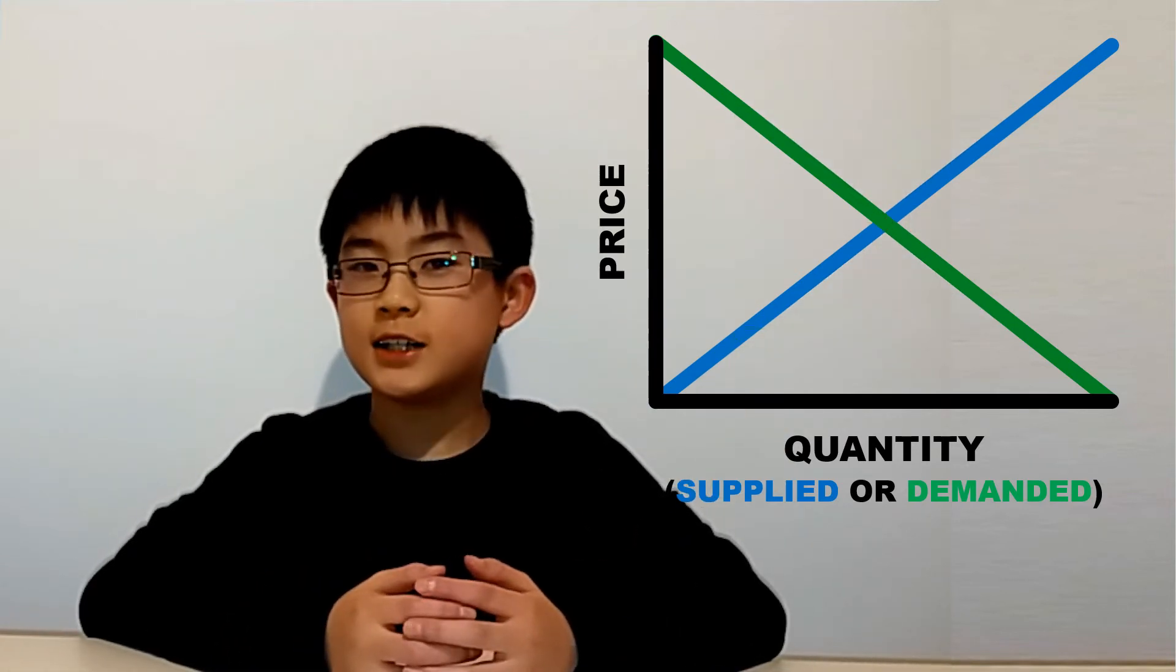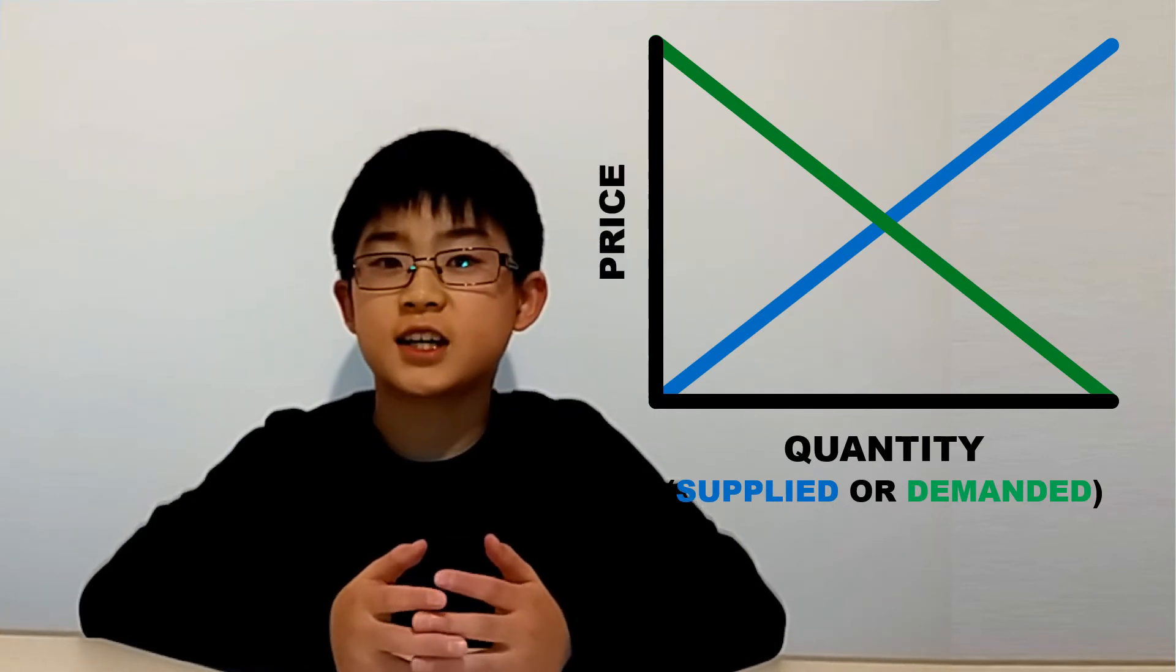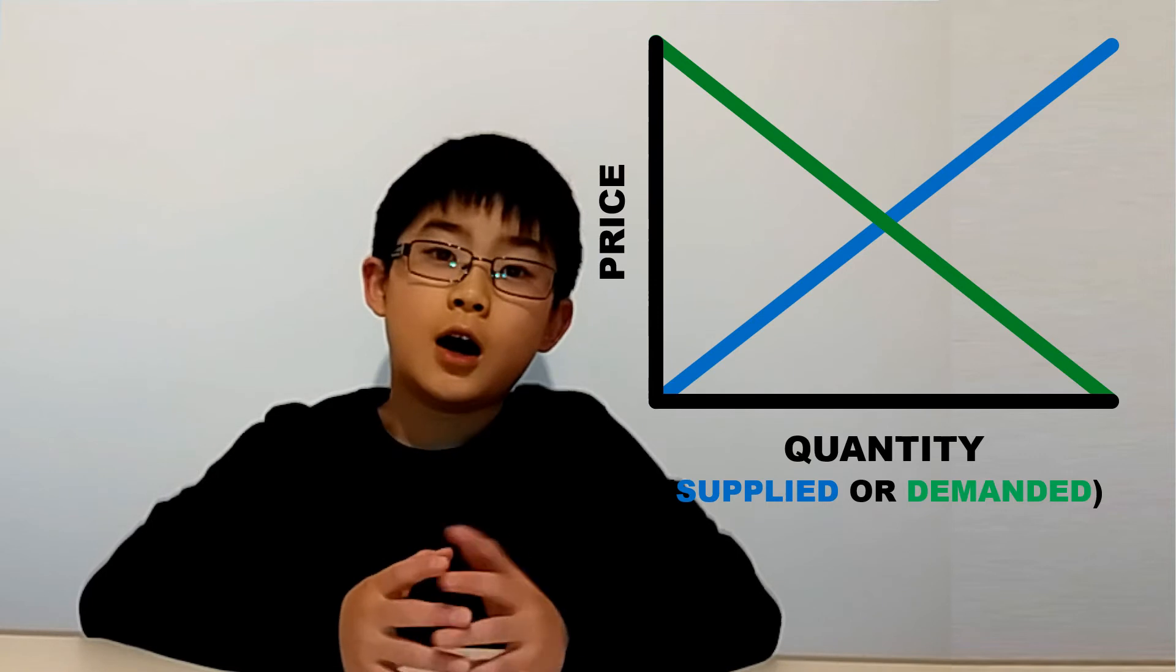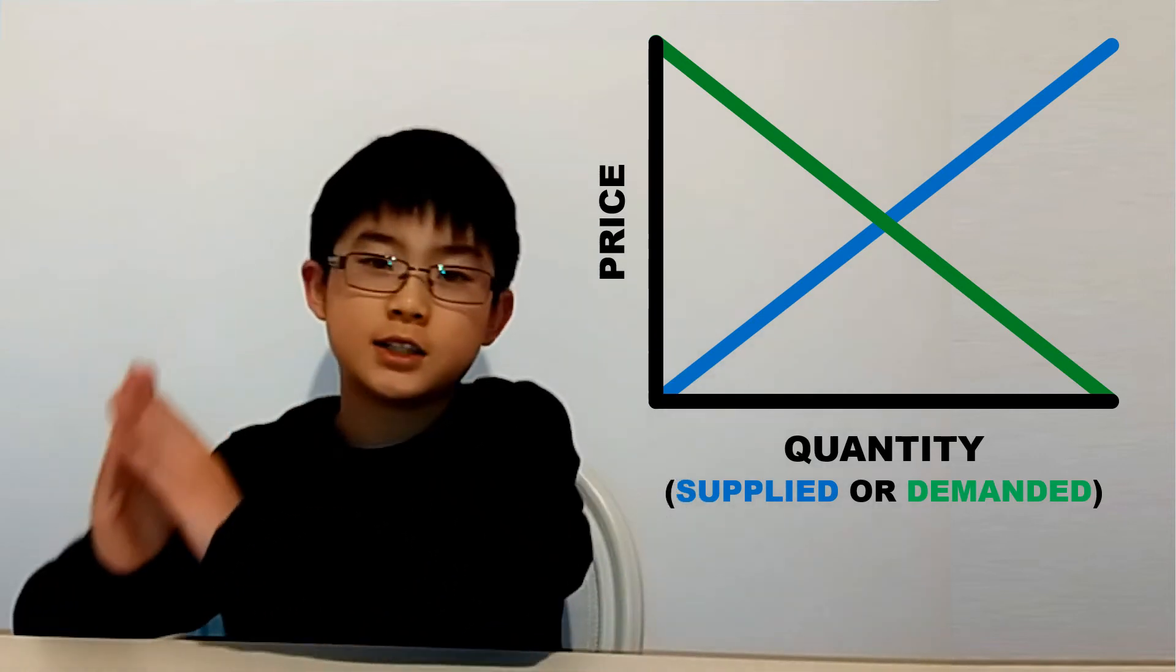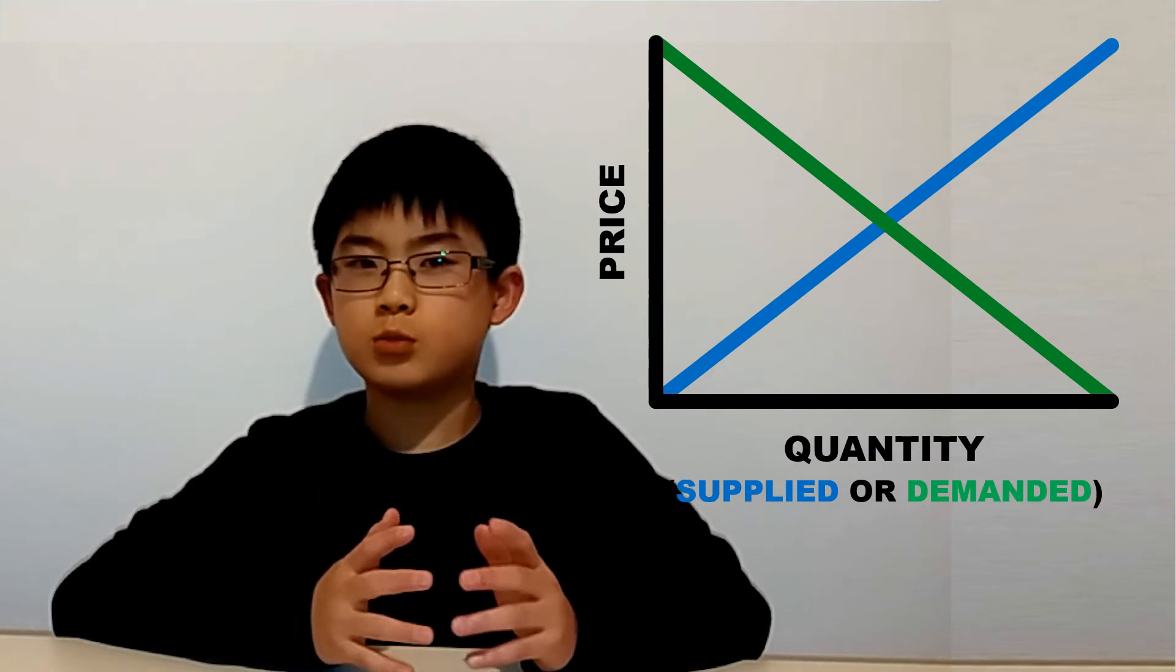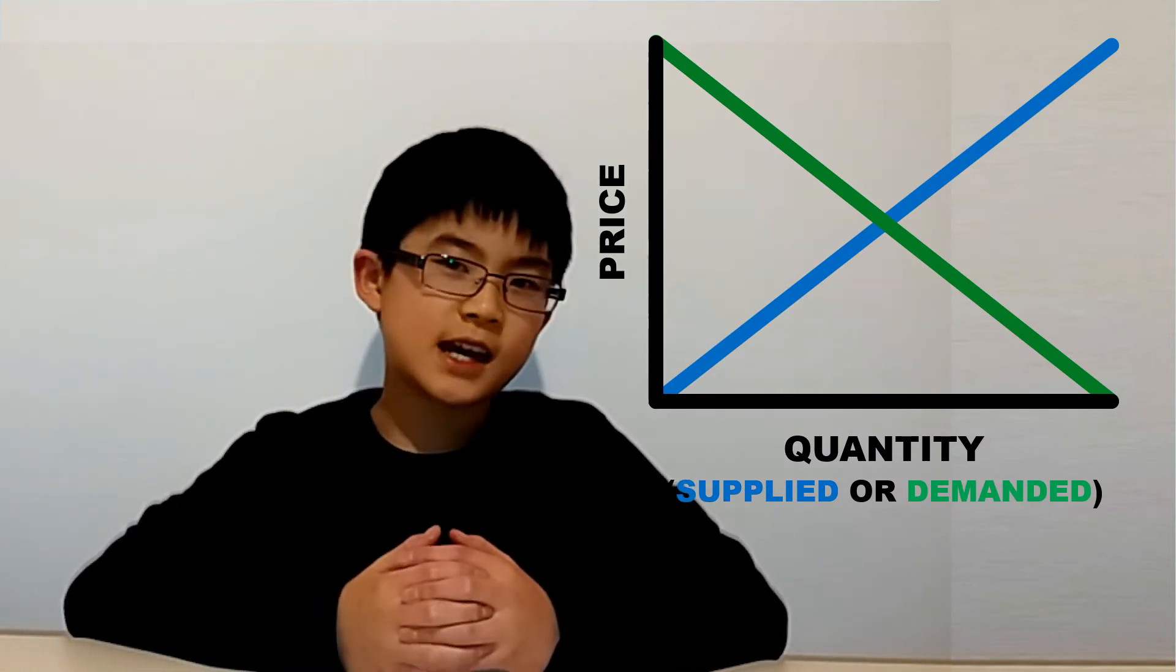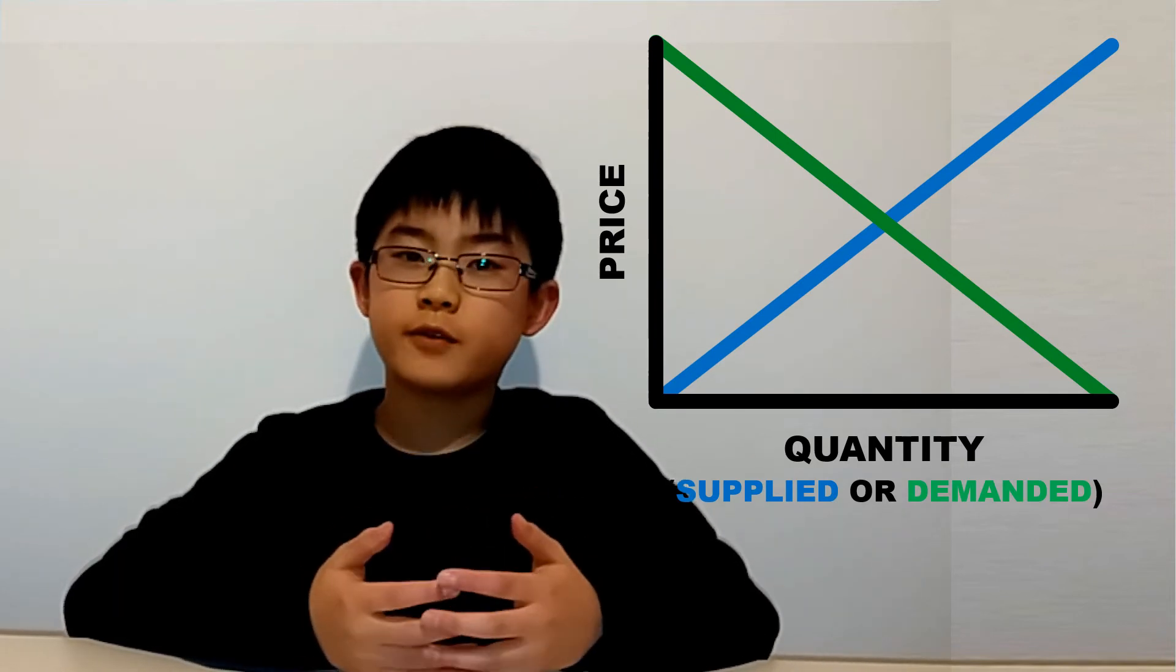So far, the only thing changing supply and demand is the price, but we all know that's not the only thing that can change supply and demand. Other factors which aren't price, which change supply and demand, actually shift these lines one way or the other. You might not really get what I mean, so let's go into an example. Say there's a heat wave or it's summer, it means demand for products like sunglasses will increase because of the change in temperature.